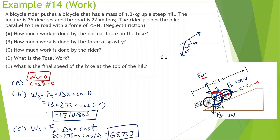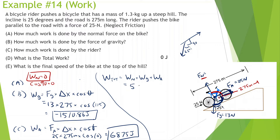Part D asks: what is the total work? Work total is going to be the work done by all the forces — work of normal plus work of gravity plus work applied. So that's zero plus negative 1,510.86 plus 6,875, and we get 5,364.14 joules. That's the total work done, adding up all the different works.